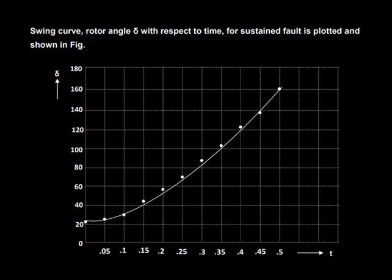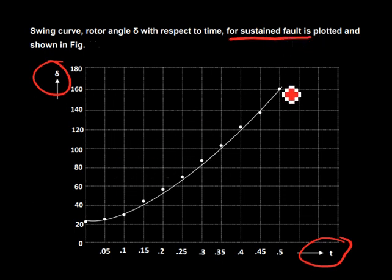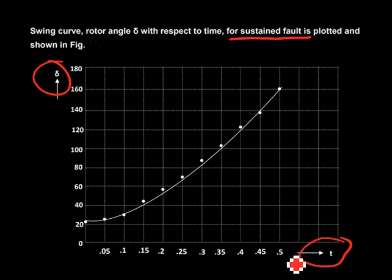From this process you can get a curve — a plot between delta and time. This curve has been discussed in earlier lectures. Considering the fault up to 0.5 seconds: for a sustained fault, delta continues to increase and you can predict it going up to around 160 degrees, which leads to asynchronous operation. This is a paper-based prediction showing the system will lose stability if the fault is sustained.